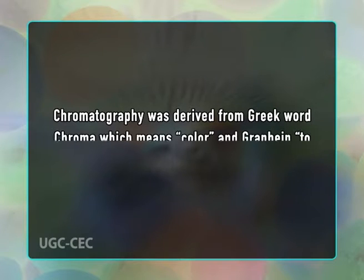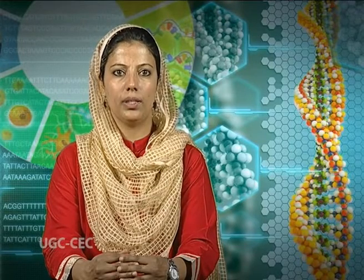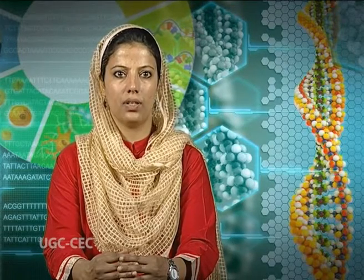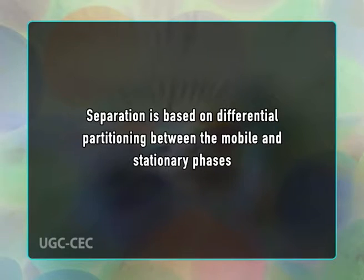Chromatography is the collective term for a set of laboratory techniques for the separation of mixtures. The word chromatography was derived from the Greek word 'chroma' meaning colour and 'graphein' meaning to write. The mixture is dissolved in a fluid called the mobile phase, which carries it through a structure holding another material called the stationary phase. The various constituents of the mixture travel at different speeds, causing them to separate based on differential partitioning between the mobile and stationary phases.